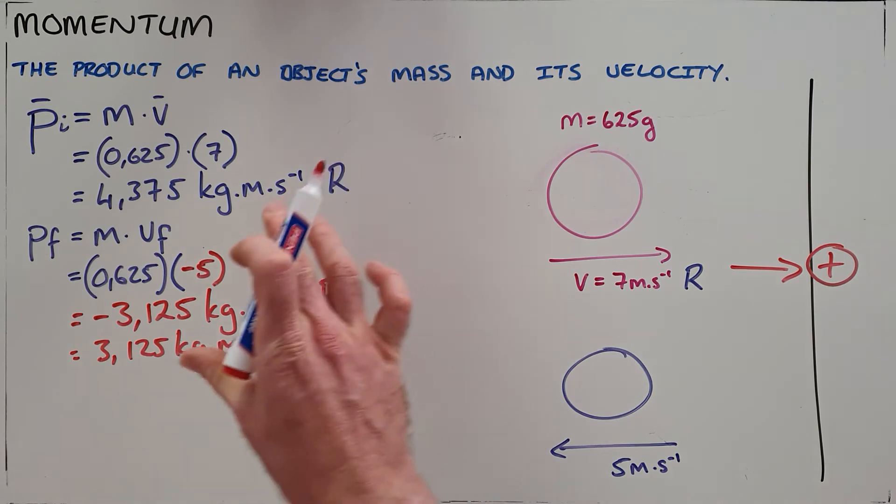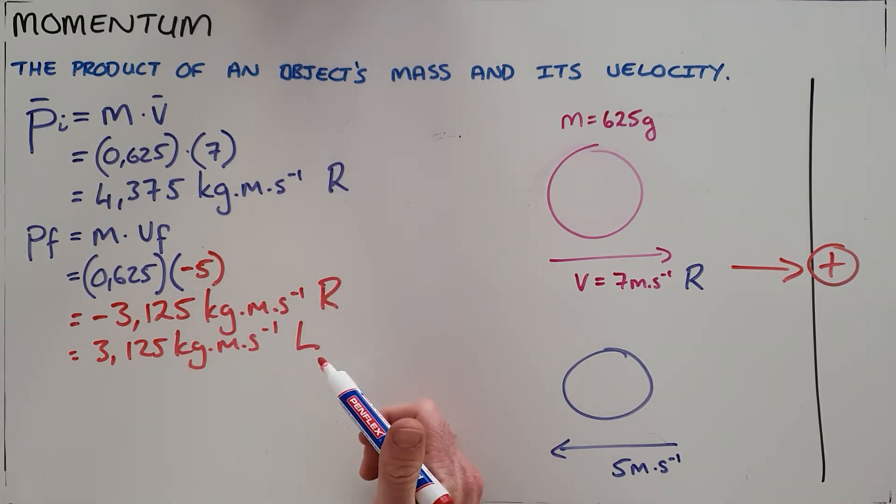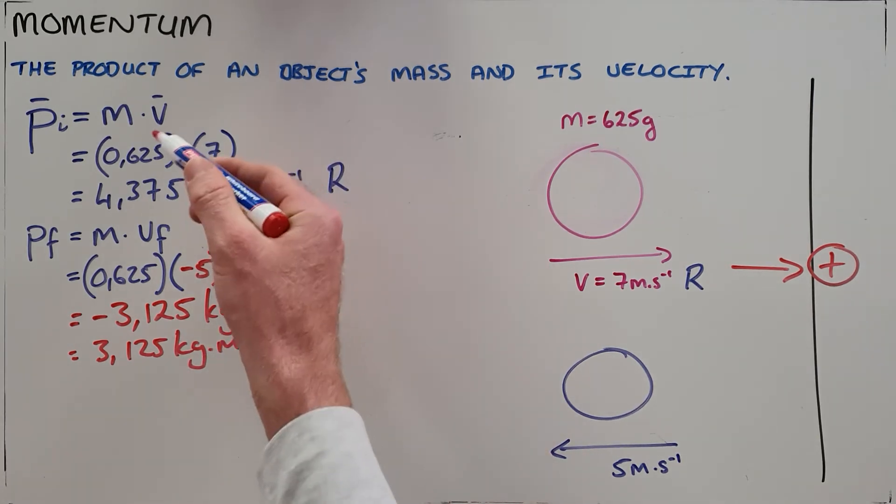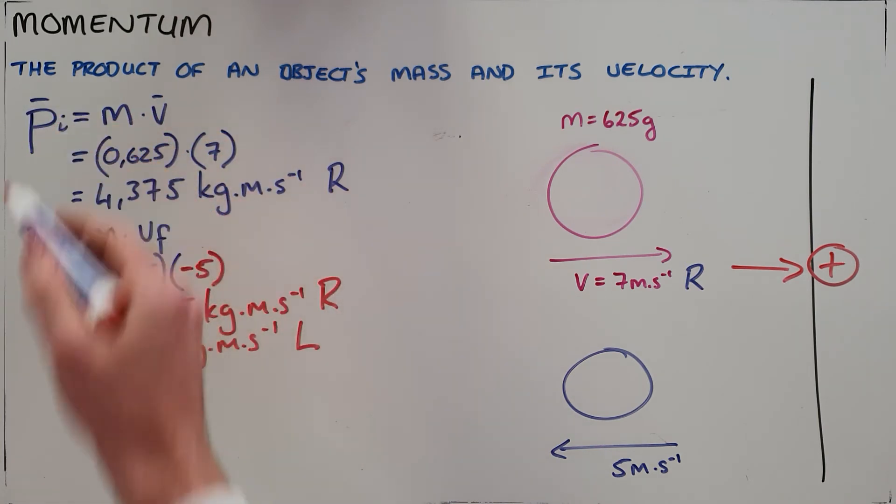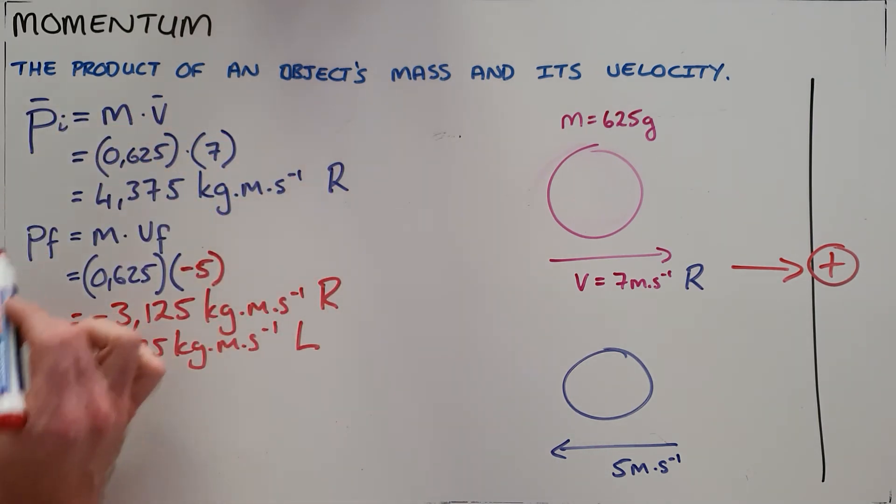What this can tell us now is it can tell us that the momentum of this object has changed. We can see that there was an initial momentum. There is now a final momentum that is different to that.